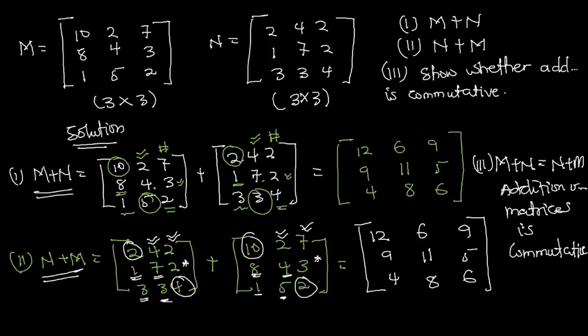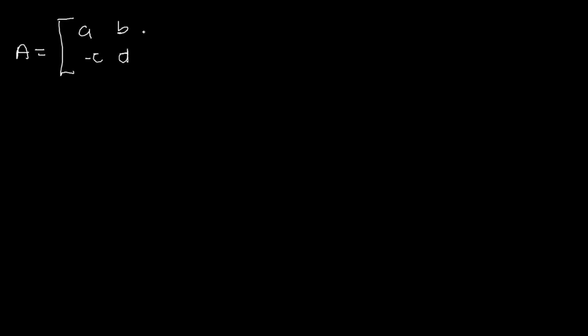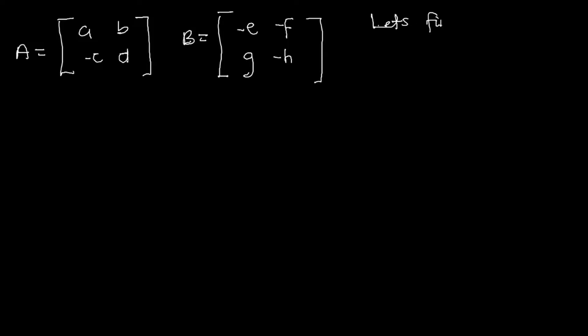Now let's look at how to subtract matrices. Suppose we have matrix A equal to a, b, −c, d and matrix B equal to −e, −f, g, −h. We have to find: (i) A minus B, (ii) B minus A, and (iii) determine whether subtraction is commutative or not.